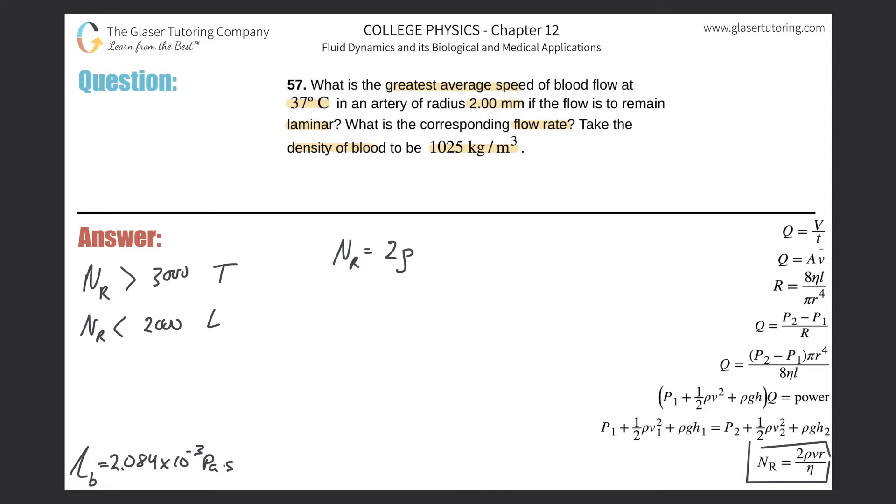The Reynolds number equation is 2 multiplied by the density of that flowing fluid, multiplied by the velocity, multiplied by the radius of the tube, divided by the viscosity of that flowing fluid.